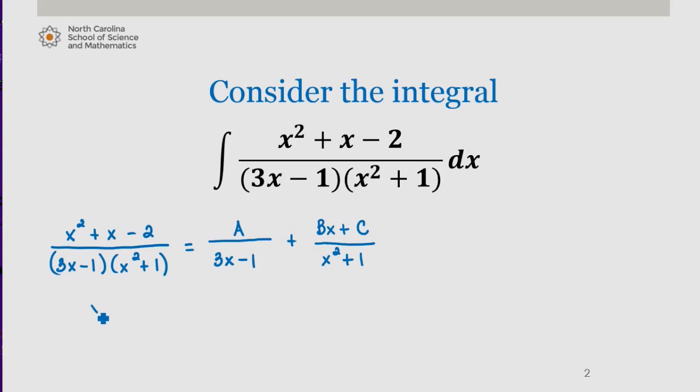This then gives us x squared plus x minus 2 equals A times x squared plus 1 plus Bx plus C times 3x minus 1.